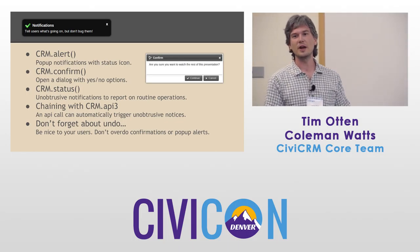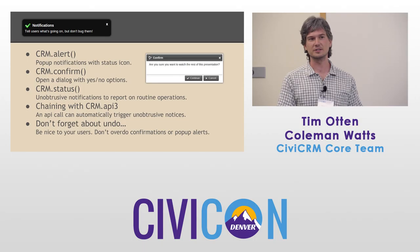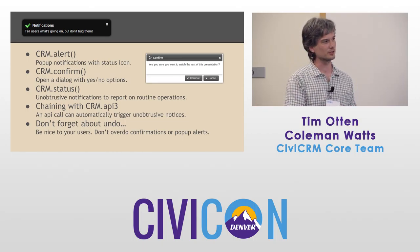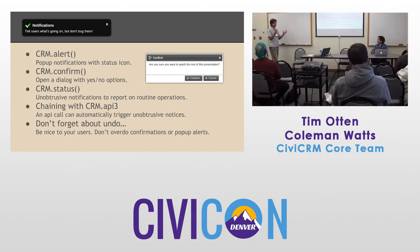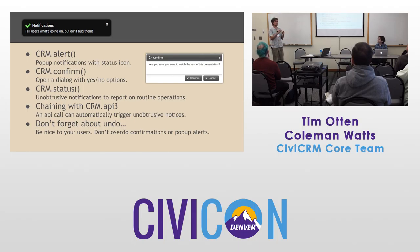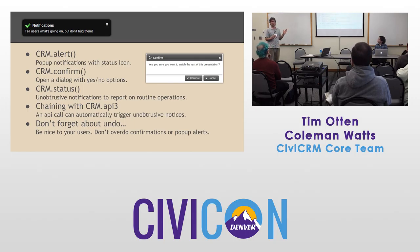Another aspect of the UI that has progressed over the years in CiviCRM — you probably remember the yellow bars with the little triangle inside them for notifications. Now we have a number of different options for notifying users, hopefully without bugging them to death. There's CRMAlert, which displays a pop-up notification.